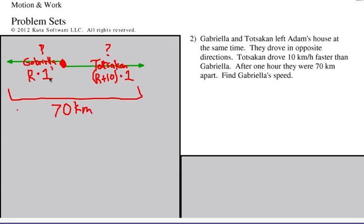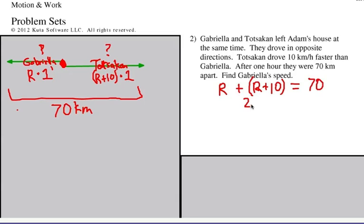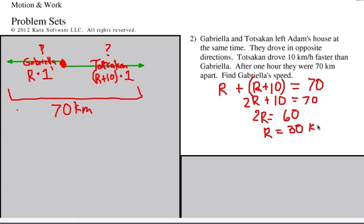The only other thing we know is that their total distance was 70 kilometers. Her distance in terms of rate times time, plus his, equals 70. So: R times one plus R plus 10 equals 70. Combining like terms: 2R plus 10 equals 70. Subtract 10 from each side: 2R equals 60. Divide by two: R equals 30.